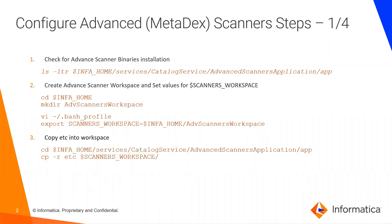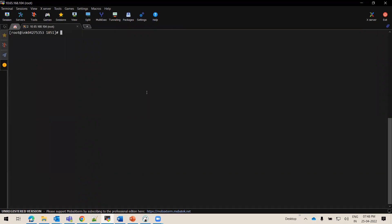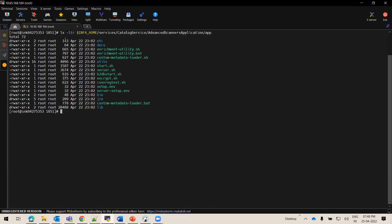To configure the Advanced Scanner or Metadex Scanners, the very first thing we'll be doing is verifying whether the Advanced Scanner binaries are already installed or not. Advanced Scanner binaries get installed under Services, Catalog Service, Advanced Scanner application folder. So we will be running the ls-ltr command to check the presence of Advanced Scanner binaries. I have logged into the Informatica domain machine and we need to log in as the user which runs Informatica services. In my case, the root user is running Informatica services, so I have logged in as root. When I run ls-ltr, I can see a bunch of files are present, which means Advanced Scanner binaries are already installed on this EDC node.